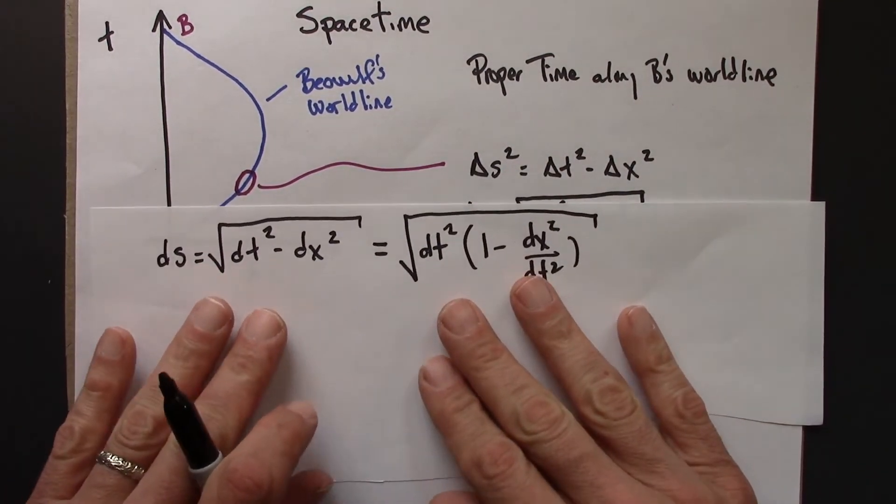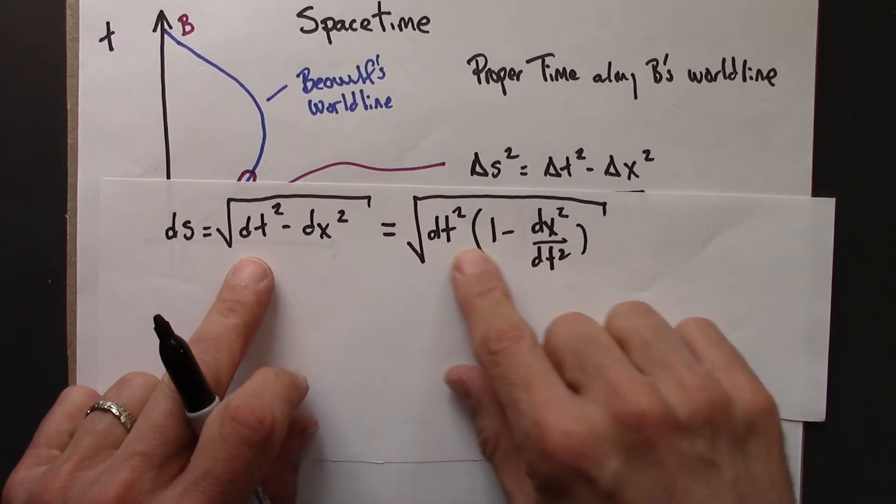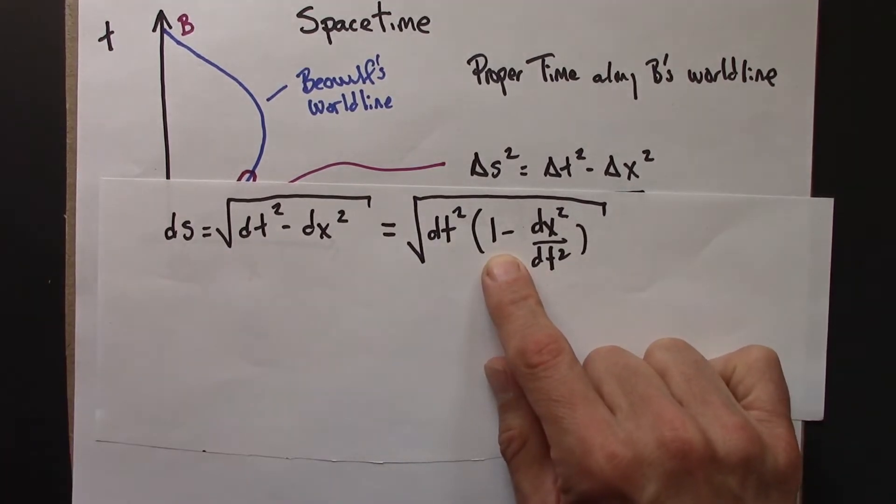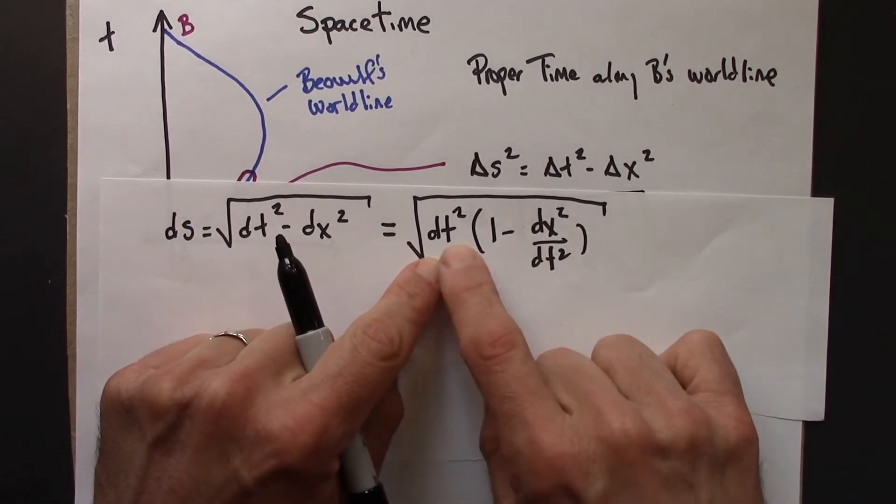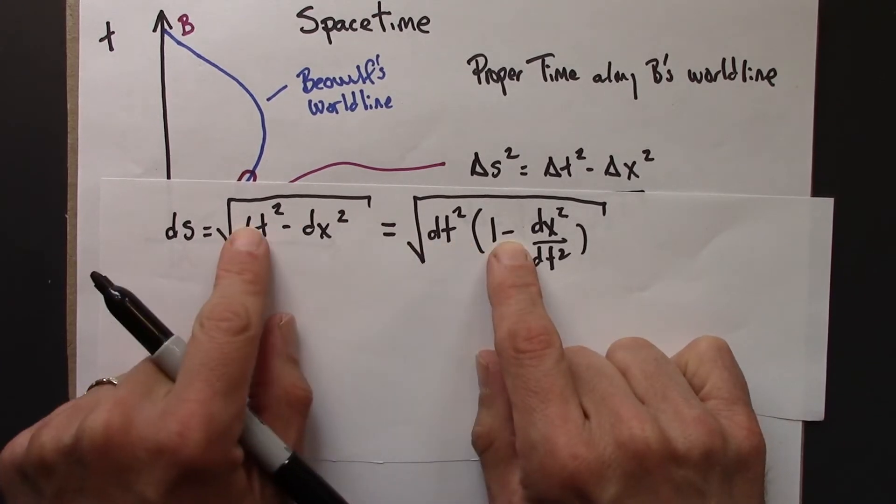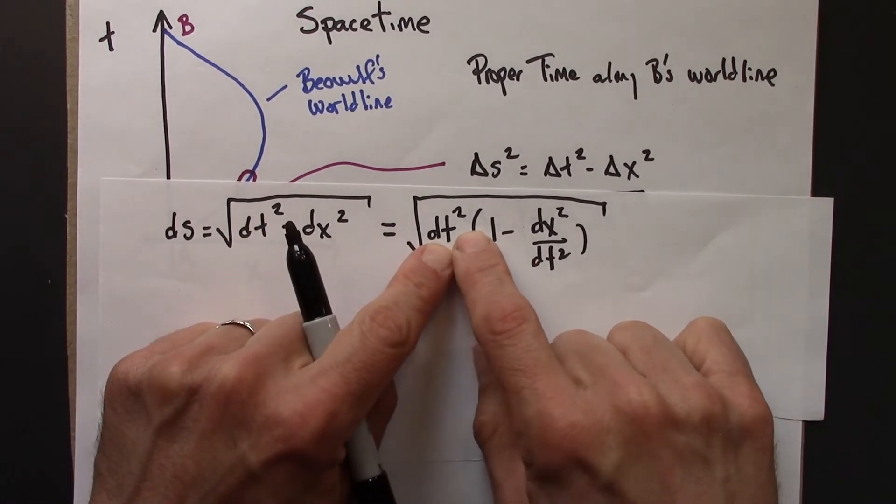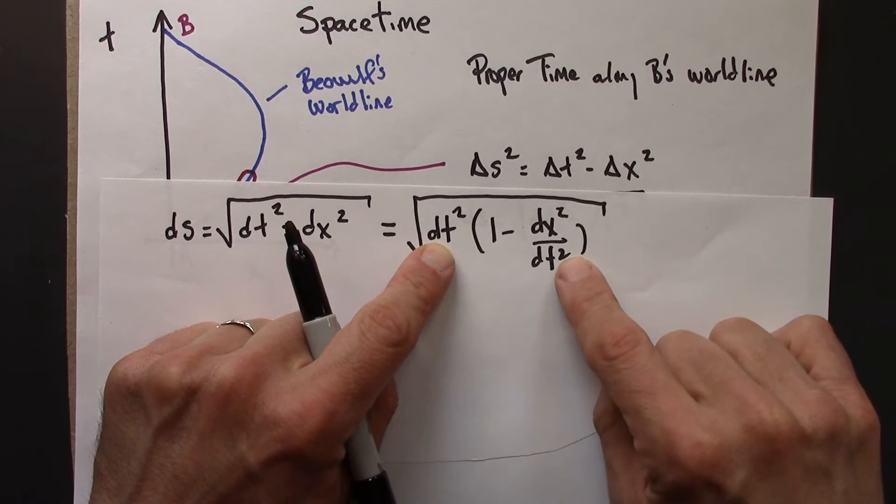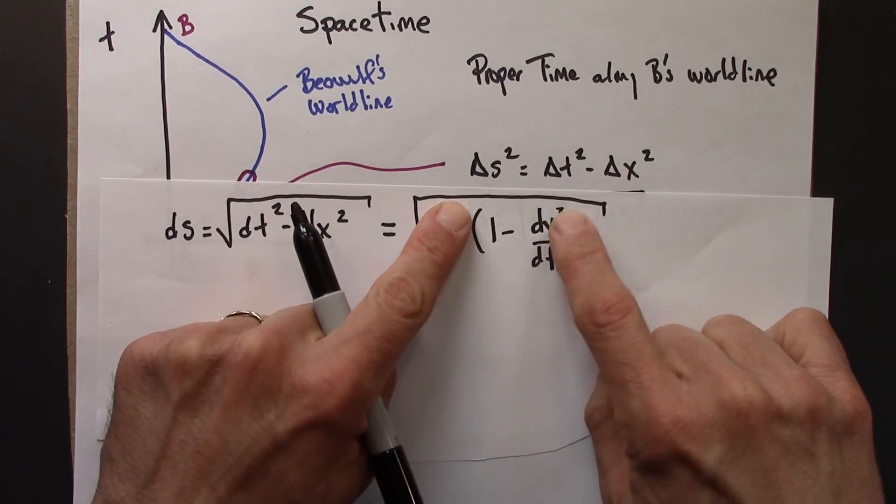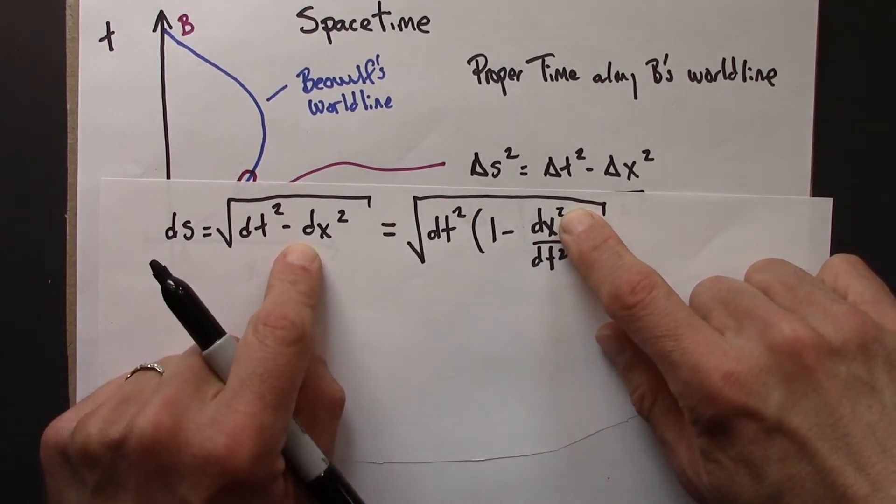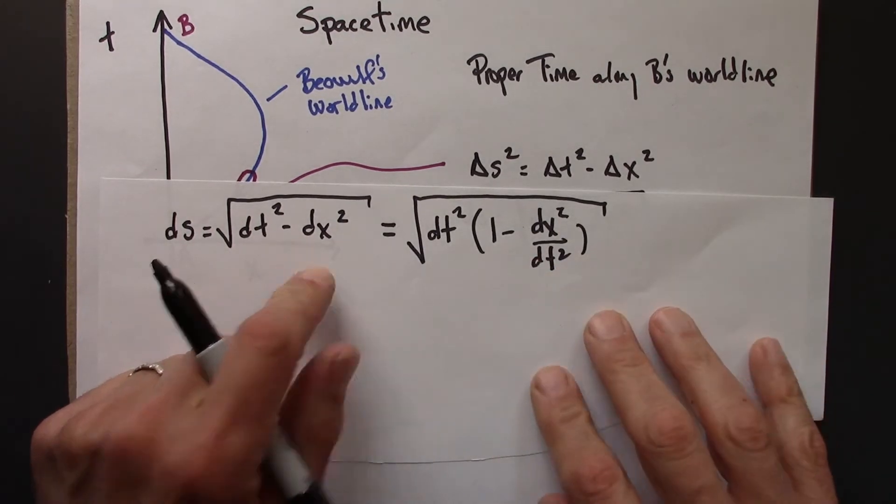It might not be immediately obvious why I'm doing that, but hopefully I can convince you that this is a legal, true move. If we distribute, dt squared times 1 is dt, dt squared times dx squared over dt squared, the dt squareds cancel, I get minus dx squared. So this is indeed a true statement.